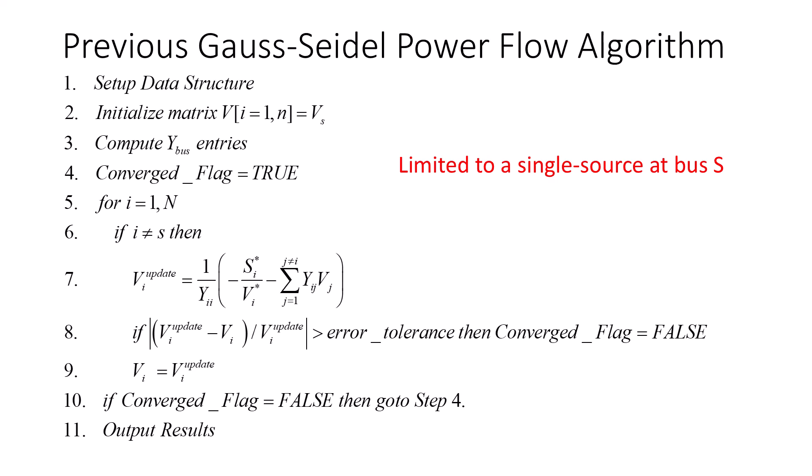The flowchart for the N-Bus system is shown here. First, the data structure is set up and a line network Y-Bus is built. Then, we perform a loop over all the buses to update the voltages through the use of the Y-Bus entries. Note that this loop does not include the voltage at swing bus S, since that voltage is fixed. If any updated voltage differs from the last iteration by more than an error tolerance factor, then we set a convergence flag to false and repeat the update loop. Once convergence is achieved, then we output the PowerFlow results.